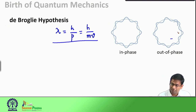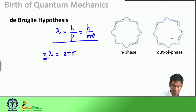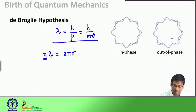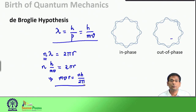What this suggests is that for an electron to be stable in a fixed orbit, it should have a de Broglie wavelength such that an integer number of wavelengths nλ fit the perimeter of the circle, 2πr. Since λ = h/(mv), we get n·(h/mv) = 2πr, which rearranges to mvr = nh/2π. This gives a justification for Bohr's assumption that the angular momentum of the orbiting electron is quantized.